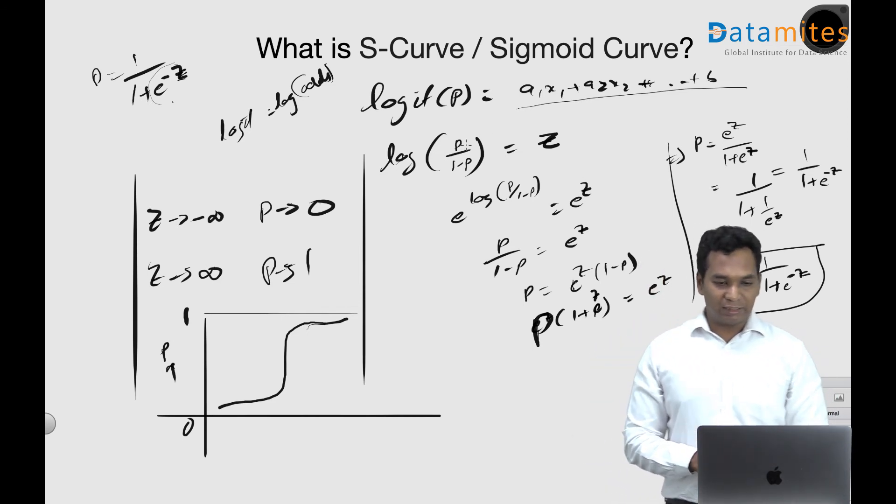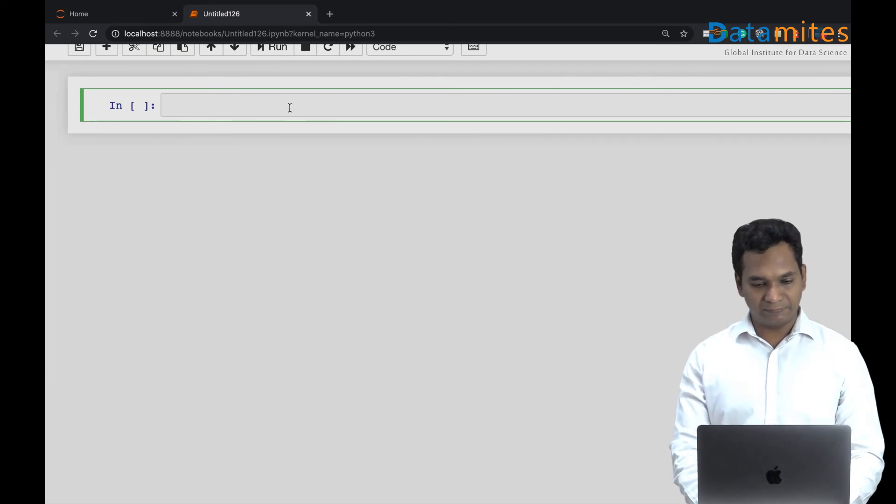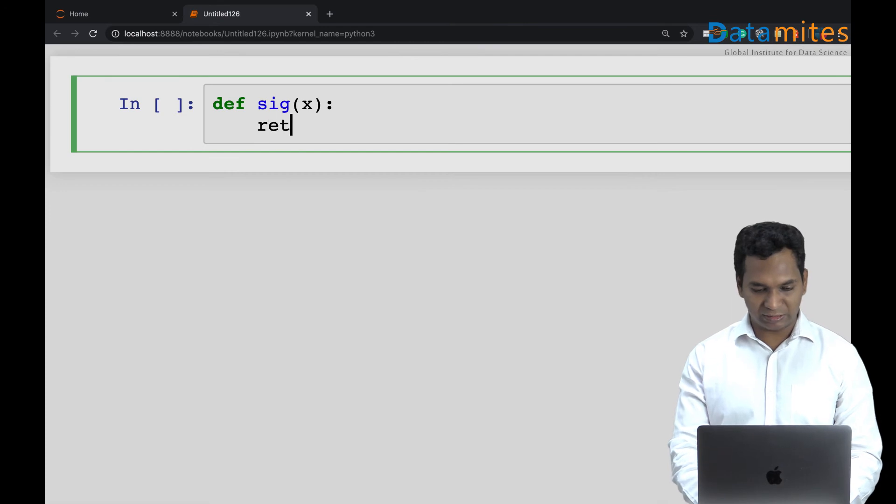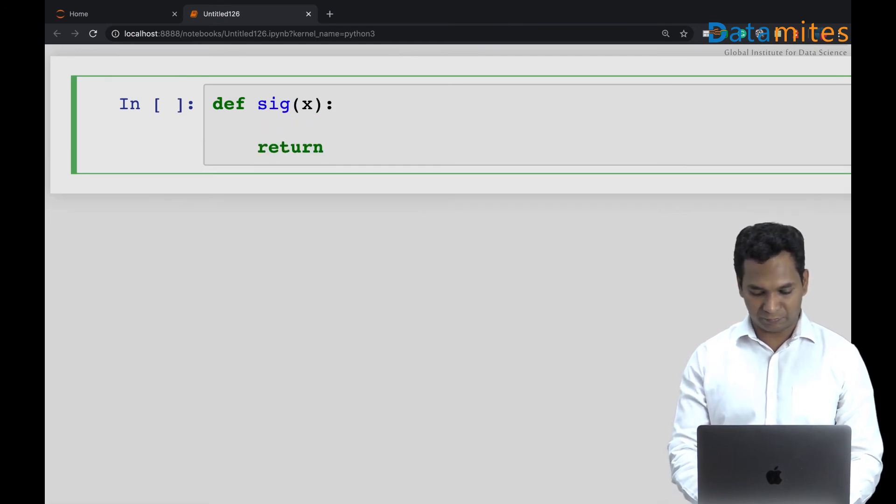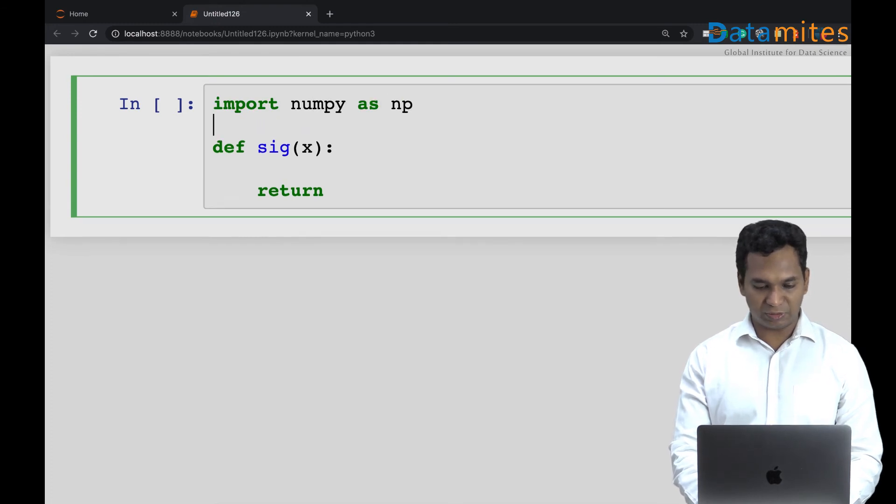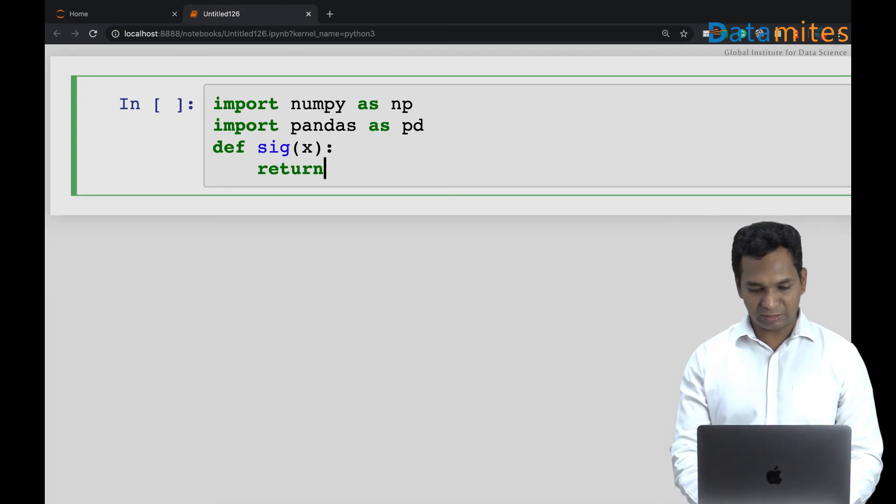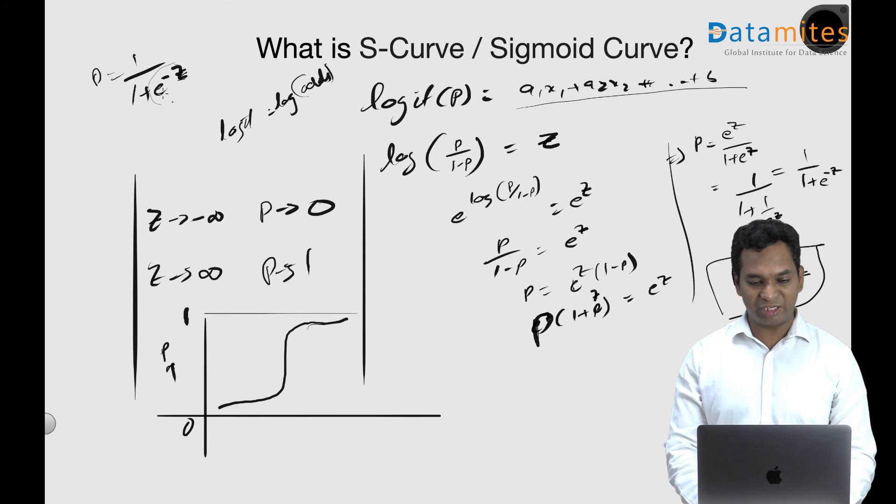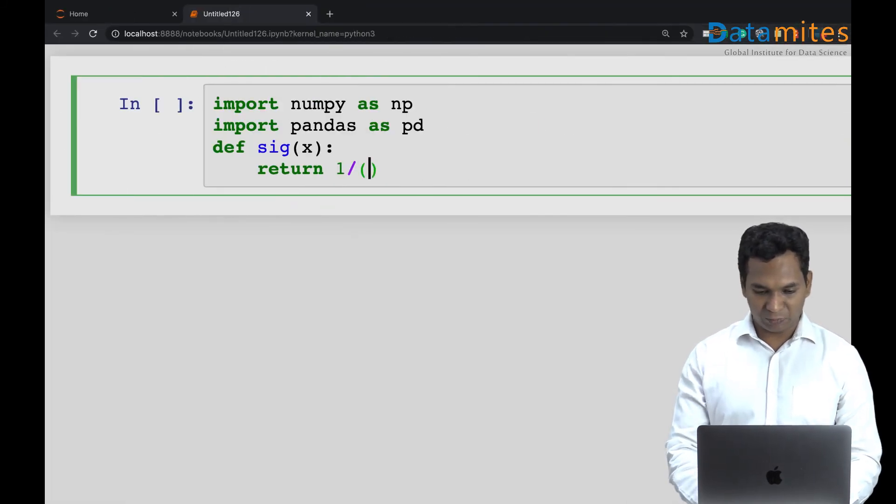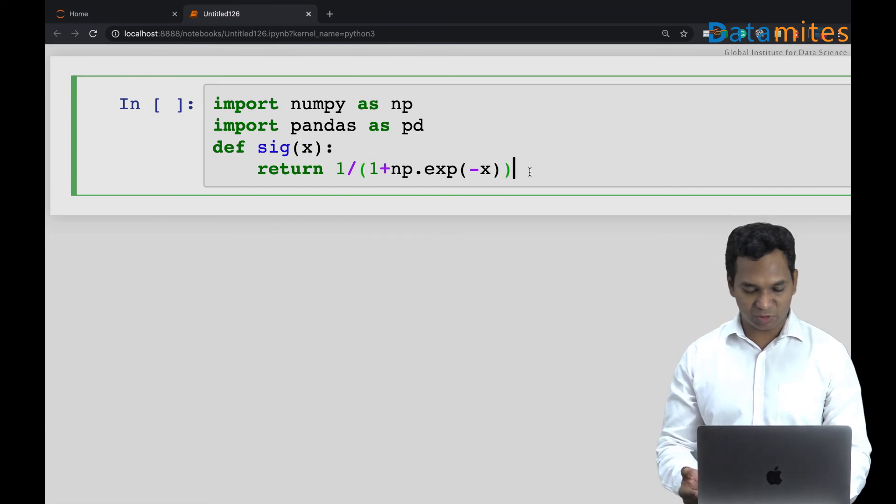We can do it in Python. Let me just quickly define a function. I will say sig, I'll pass on the x. I'm going to say return. Let me import numpy. Import numpy as np. I also import pandas as pd. I'm gonna say return, it is 1 by (1 plus e to the power of z). So I can say 1 divided by (1 plus np.exp of minus x) because this x is the input value. So this becomes your sigmoid function.